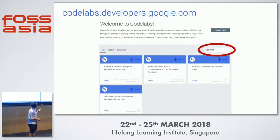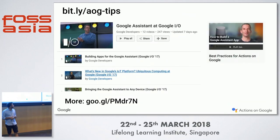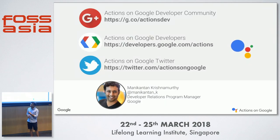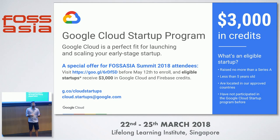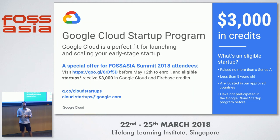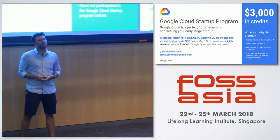Conversational design ensures conversation feels like speaking to a human. We have a set of guidelines for creating better assistant-driven applications — not just on the Google Assistant but generally for voice-enabled interaction. We also have codelabs so you can try out code, and videos at the URL shown. You can follow Google Assistant for the latest news. Finally, if you're a startup interested in building applications and want to use the Google Cloud Platform, you can apply and get $3,000 of credits. Thank you.